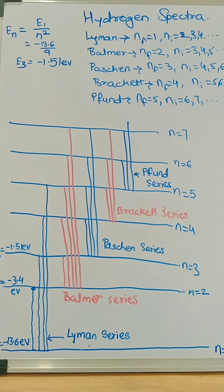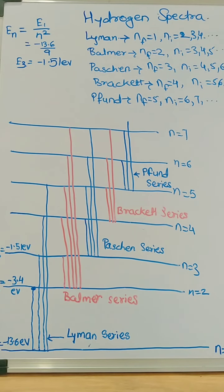I hope this video explained the hydrogen spectra very well — how to draw the different series with the help of energy levels and energy values. How to find out energy values was studied in our last video, so please refer to that video to find out the energy values for different orbits. Thank you.